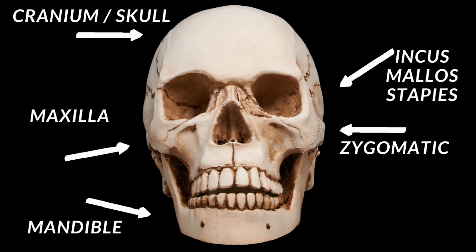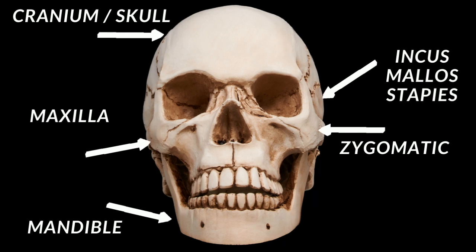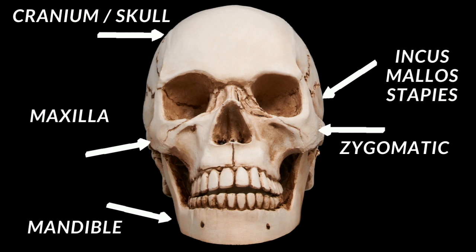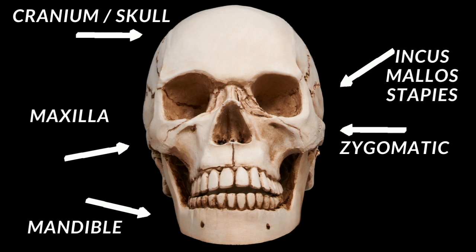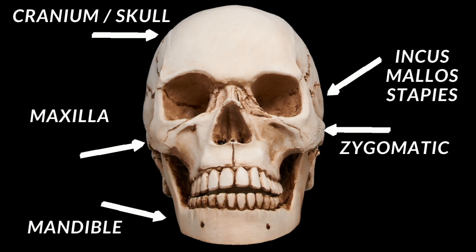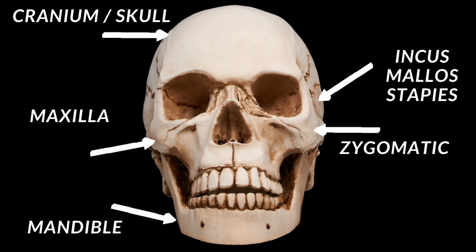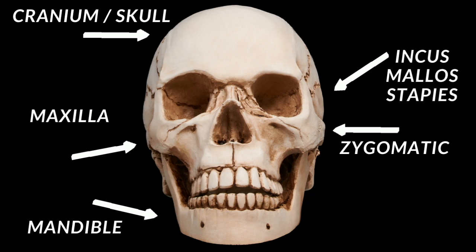The top bone of the mouth — the upper bone which connects to the mandible — is called the maxilla. There are also three bones in your ears: they are called the incus, malleus, and stapes.